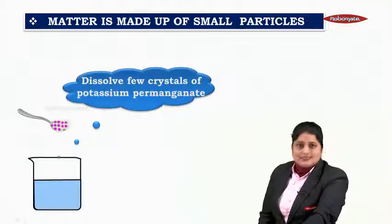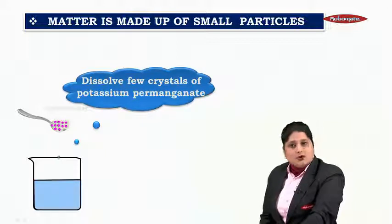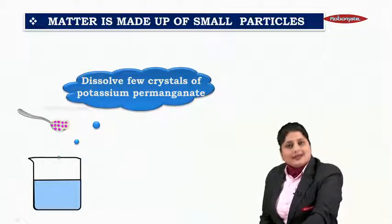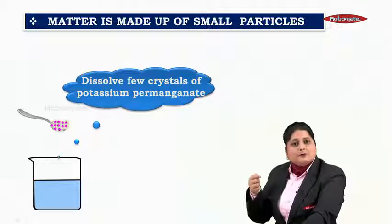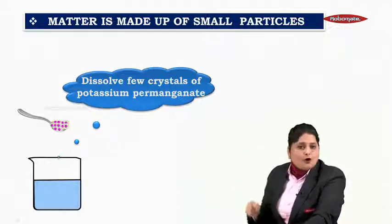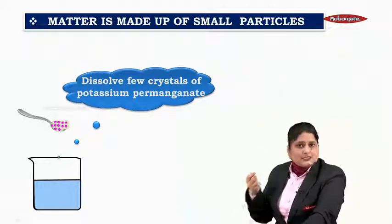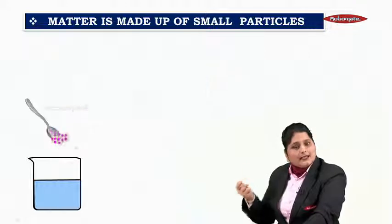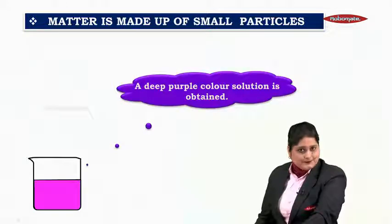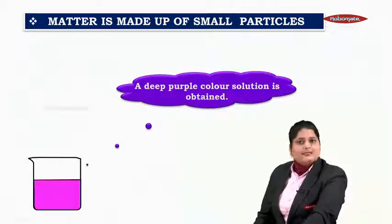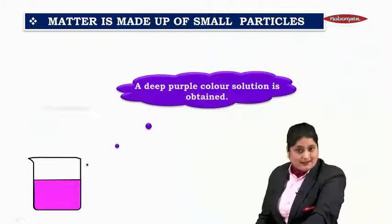What next you will be doing is dissolve a few crystals of potassium permanganate. It is a solid which is purple in colour. You have to dissolve a few crystals of potassium permanganate in this beaker containing water. What will you see? A deep purple colour solution is obtained.